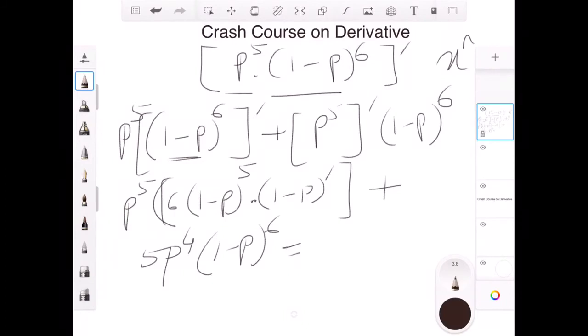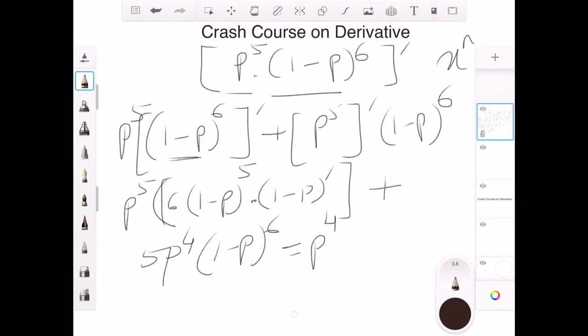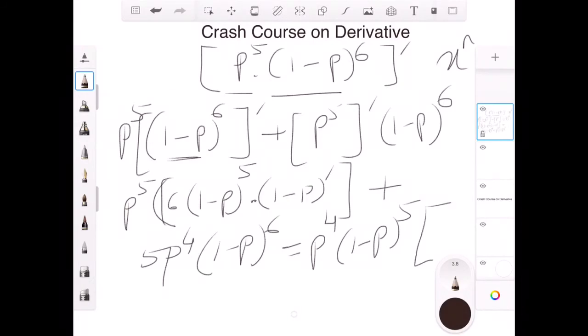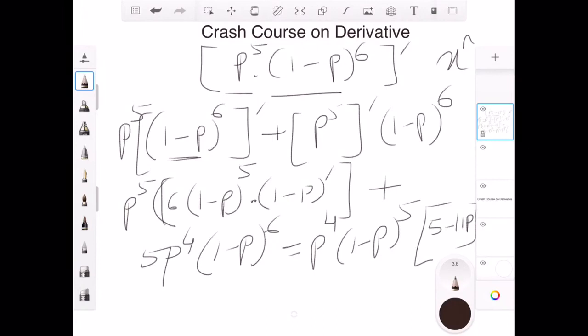This can be simplified again. If I take the common terms, I can see that p to the power 4 is common, 1 minus p to the power 5 is common. If I rearrange the terms, it can be written as 5 minus 11 p. This becomes your final expression: p to the power 4, 1 minus p to the power 5, and 5 minus 11 p equal to 0. We've already done this analysis that p cannot be 0 or 1 because we've seen cases of both heads and tails. The only thing that can be 0 is 5 minus 11 p equals 0, and p is nothing but 5 over 11. This is the probability which will maximize this function.